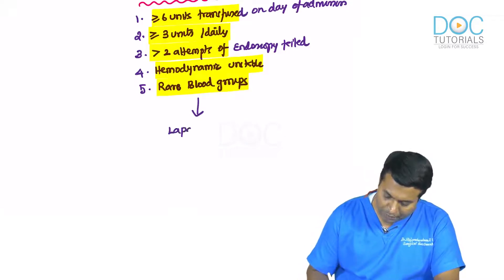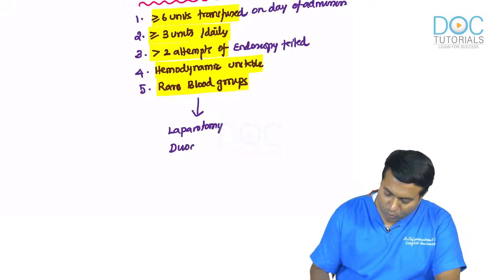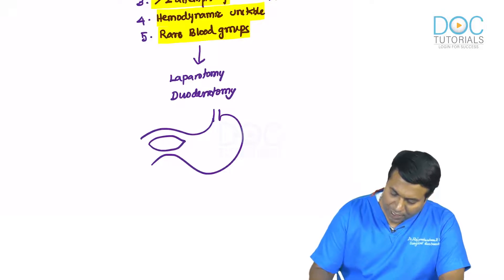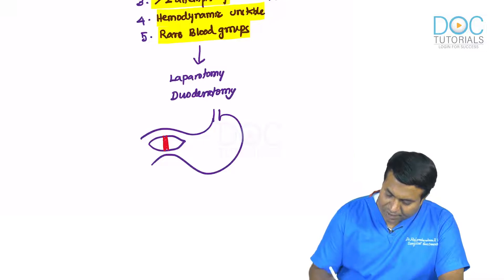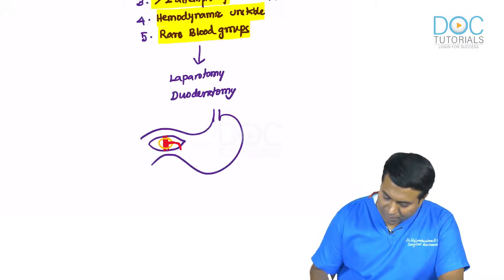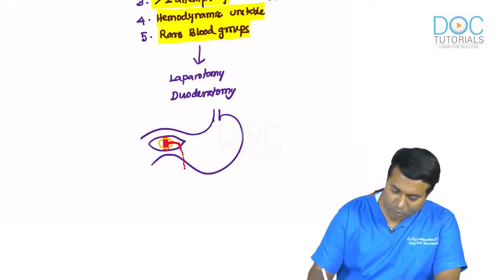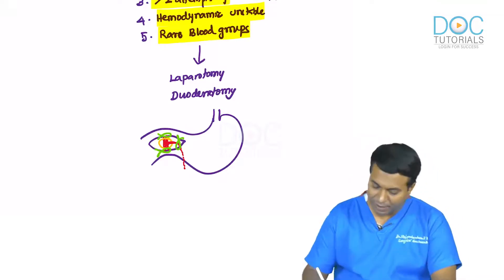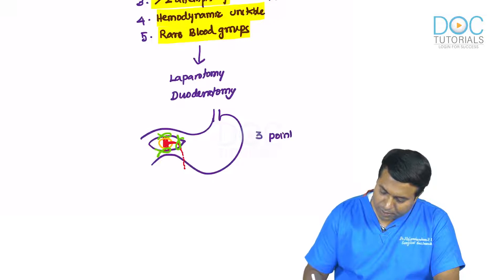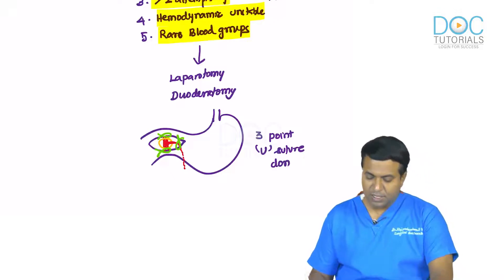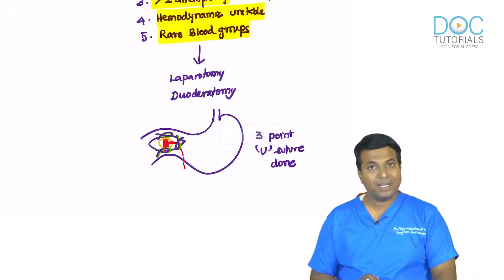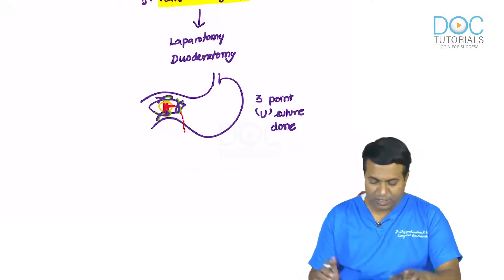Surgery: perform laparotomy, open the abdomen, then duodenotomy — the first part of the duodenum is opened horizontally. The posteriorly located ulcer on the gastroduodenal artery is visible. Perform a three-point U suture ligation above, below, and laterally, then close the duodenum. This is sufficient for unstable patients.